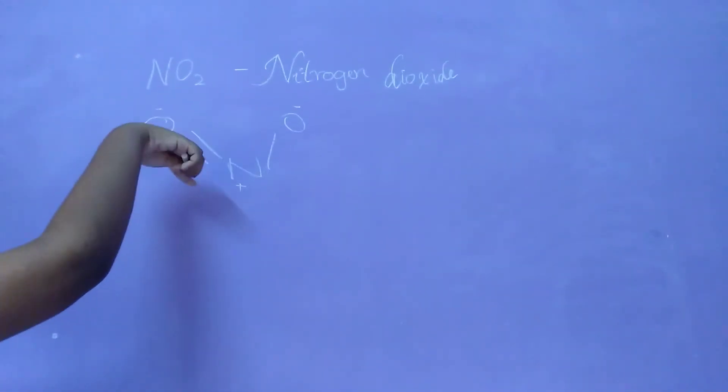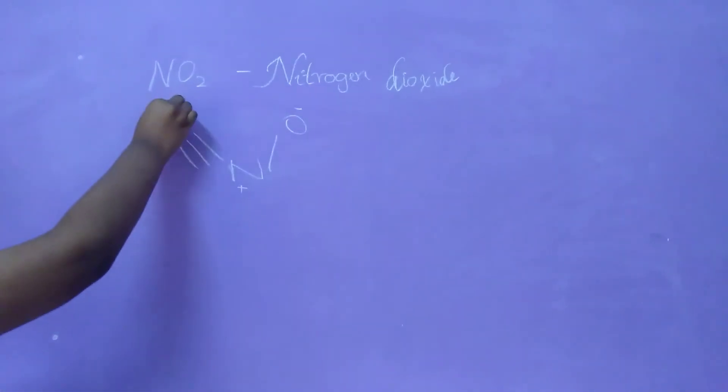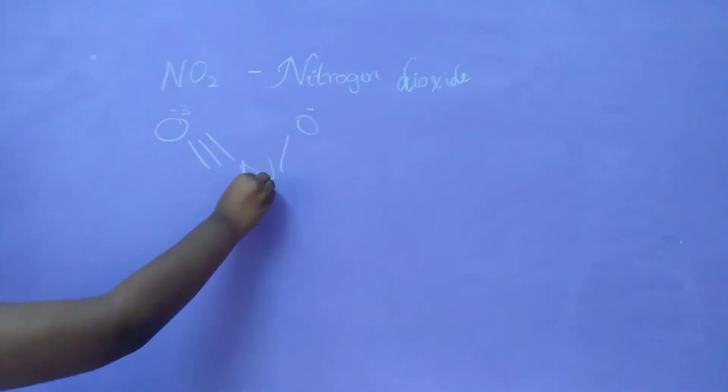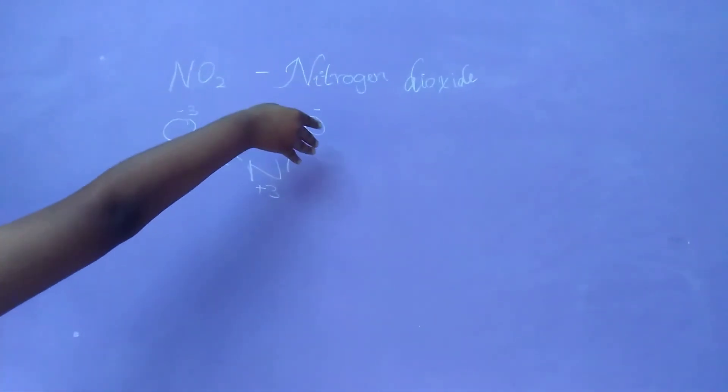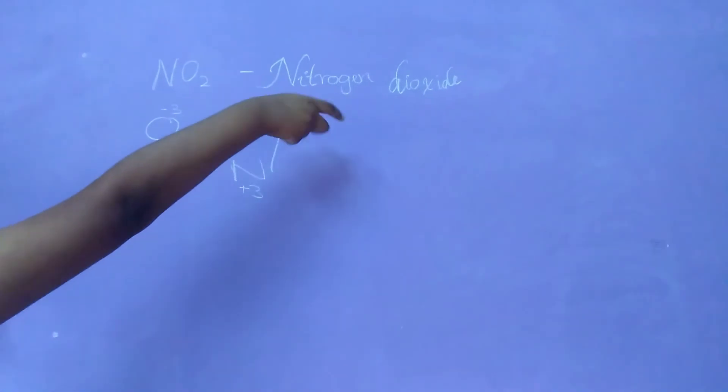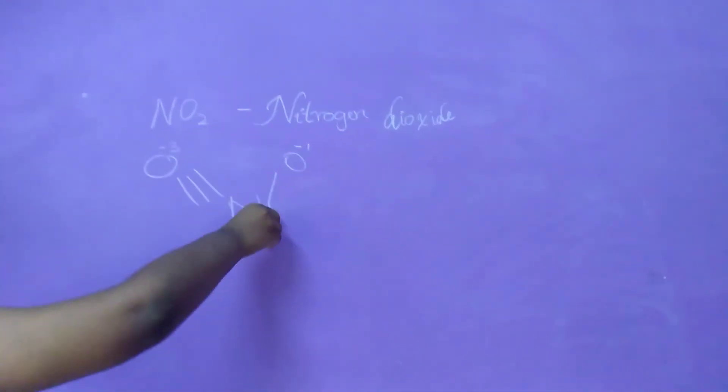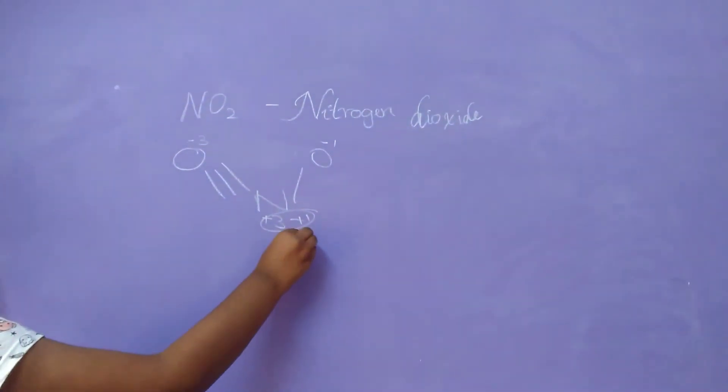There are three bonds between oxygen and nitrogen (triple bond), so we write minus 3 and plus 3. On the right side, nitrogen is single bonded with oxygen, so just one bond. We write minus 1 and plus 1. Adding these, we get plus 4.